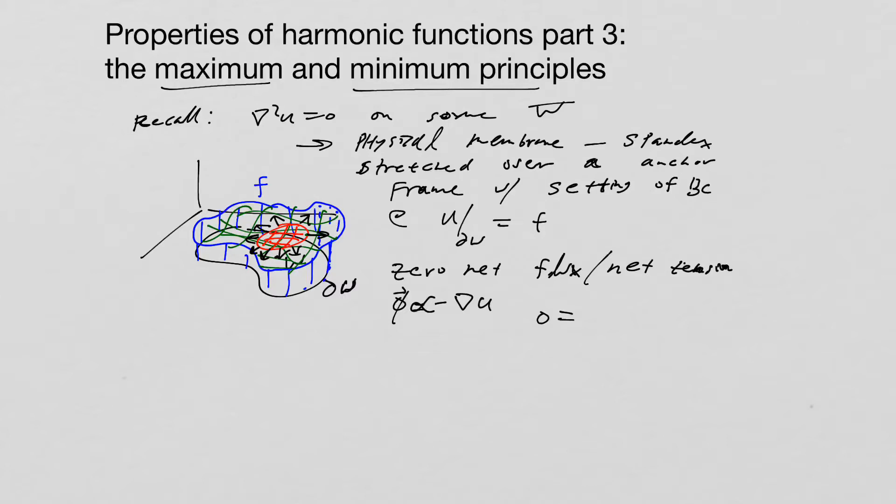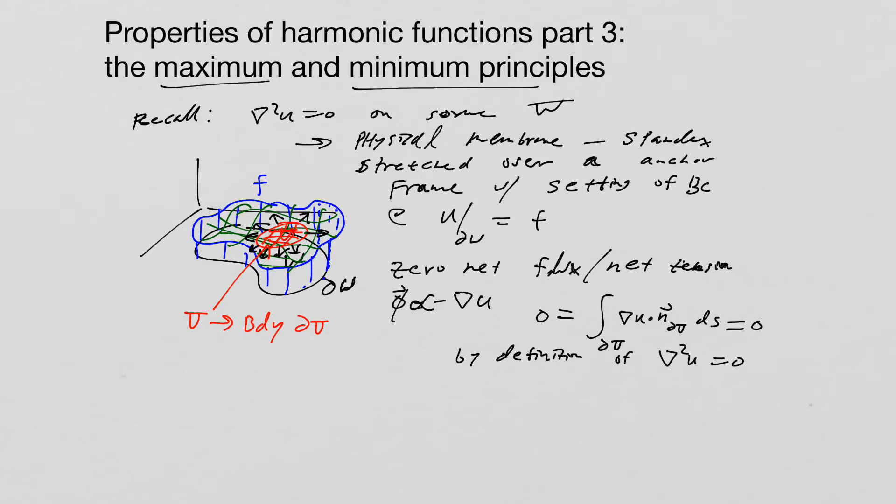We know that tension is going to be a vector field that's proportional to the negative gradient of u. And we know that it has to be equal to zero on any boundary. So if we have this set capital U and it has a boundary partial U, then on that boundary, if I look at the gradient and dot it with the boundary's normal vector ds, that has to be net zero, and that's by definition of being a harmonic function.